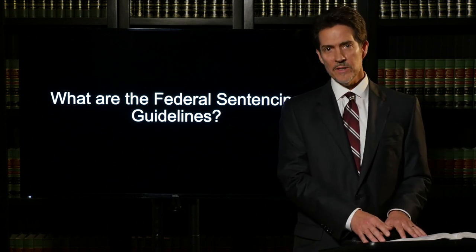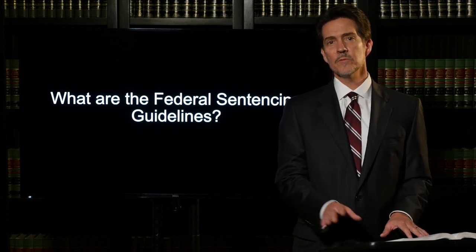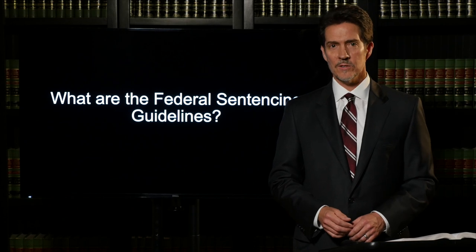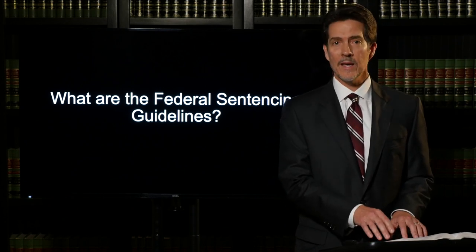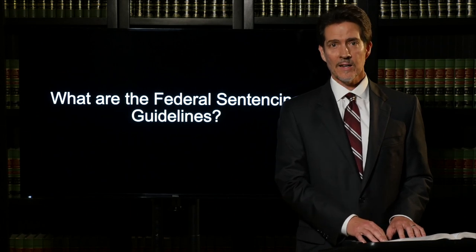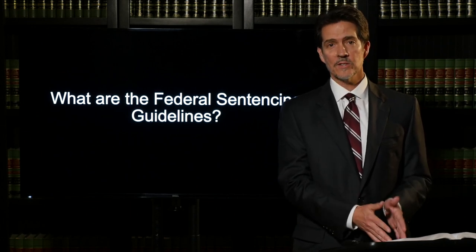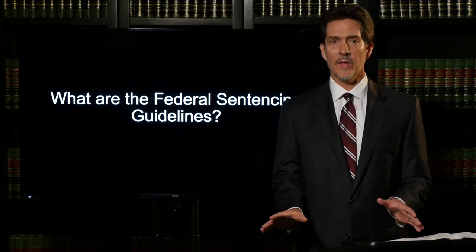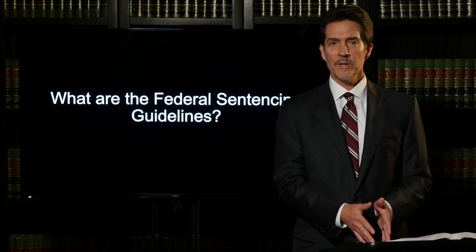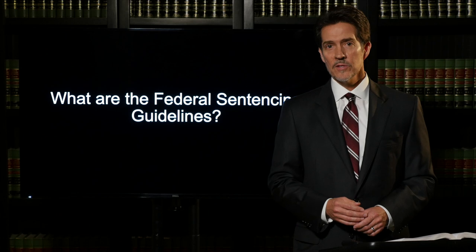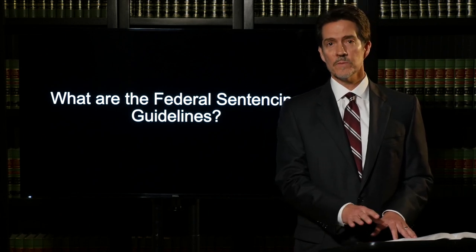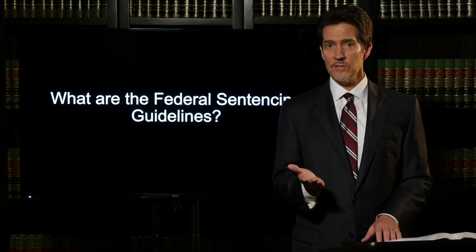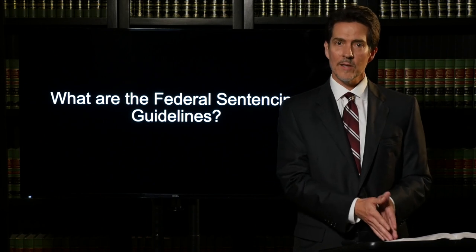So Congress came up with these guidelines, put them all together, and instructed federal judges to calculate these guidelines and then to apply them in every federal criminal case. When they were first enacted, they were mandatory — once the judge calculated the guidelines, that was the sentence in almost every case. But about 10 years ago, the Supreme Court said you can't do that, because these are facts not found by juries. So now these guidelines are advisory: the court has to calculate the guidelines but can sentence someone to more or less time depending upon the unique facts of the case.